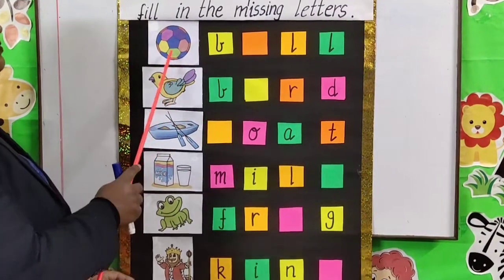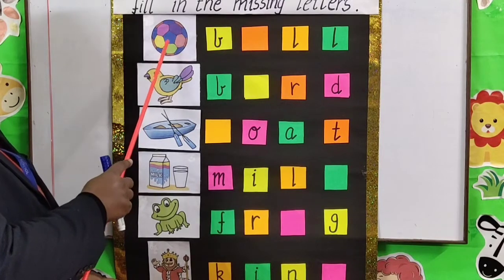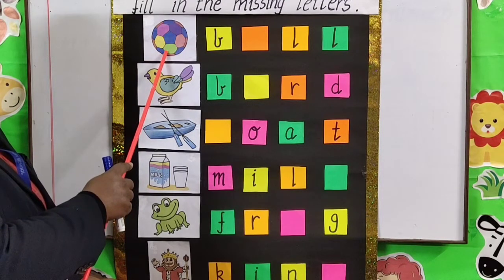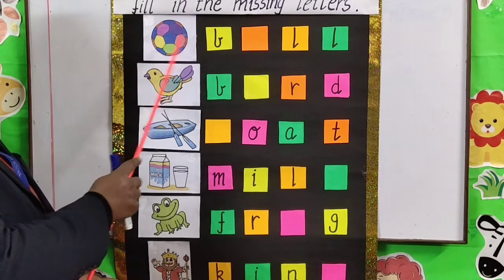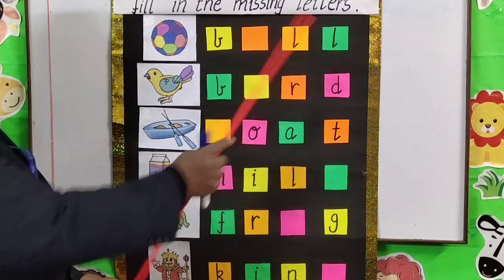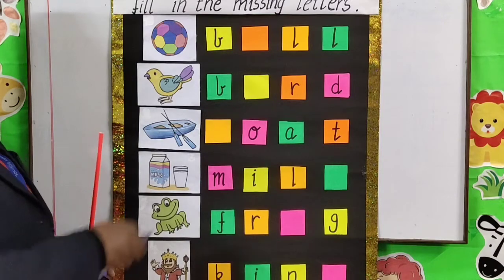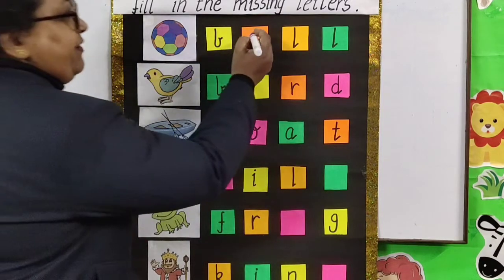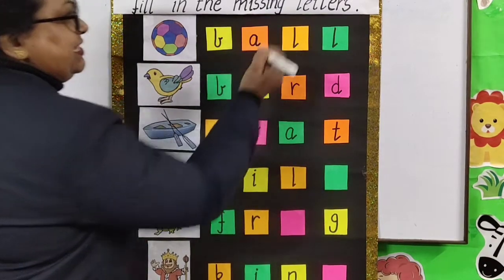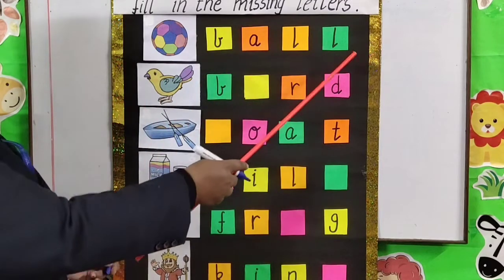So our first picture — yes, it is a ball. And what is the spelling of a ball? B-A-L-L. And which letter is missing here? A. B-A-L-L. Ball.